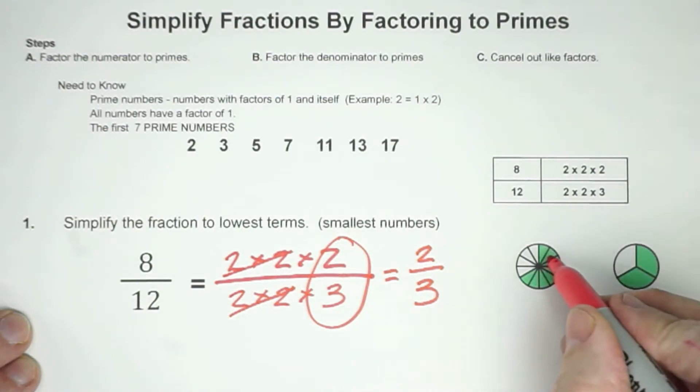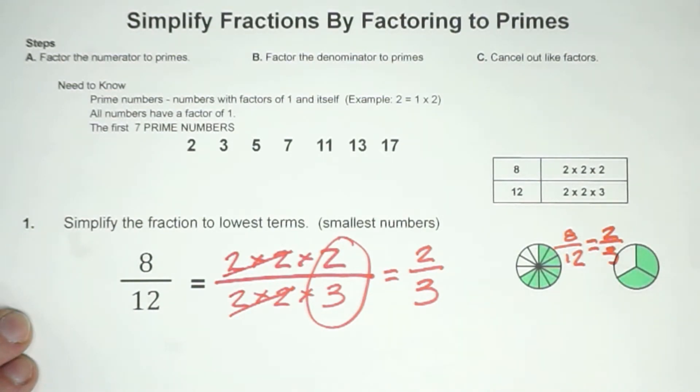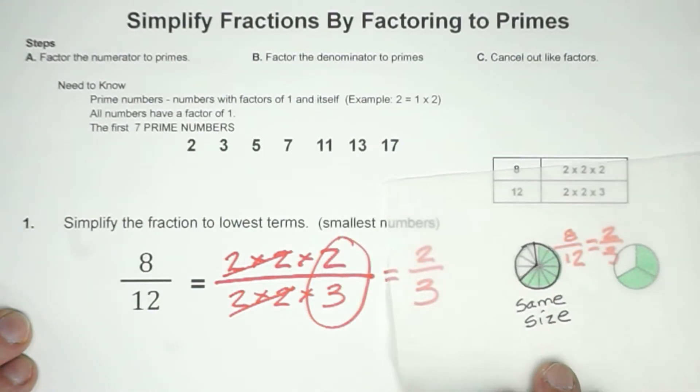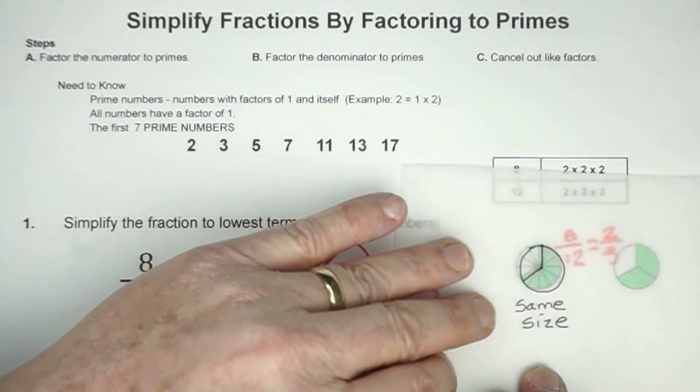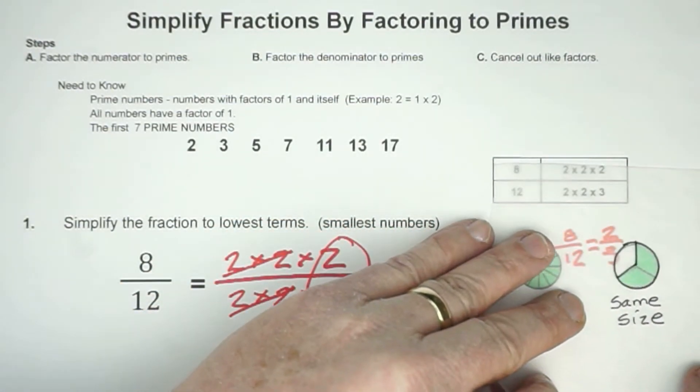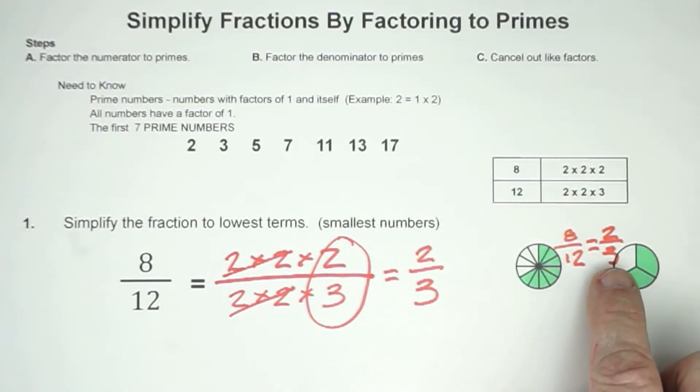On the model, you can see that this here is our 8 twelfths, and this here is our 2 thirds, and they are equivalent. And remember when we simplify fractions, the numbers change, but the size, if we can get that lined up, see how the green section is the same size? So the size is the same, but you'll notice that our numbers in our simplified fraction are getting smaller.